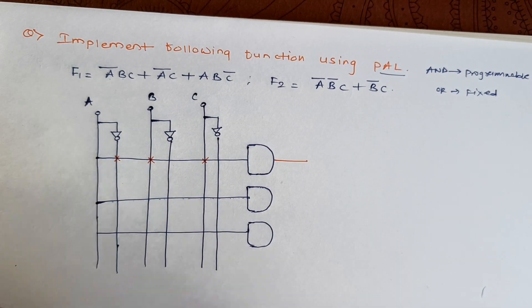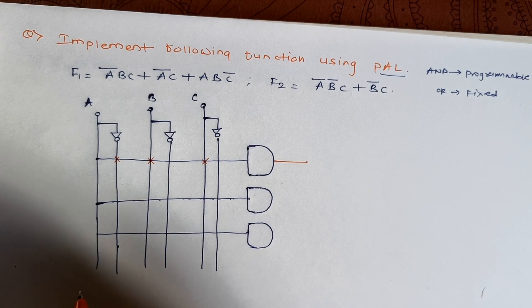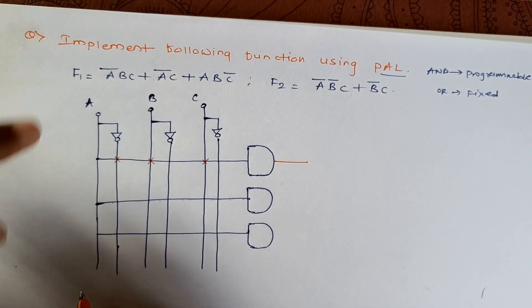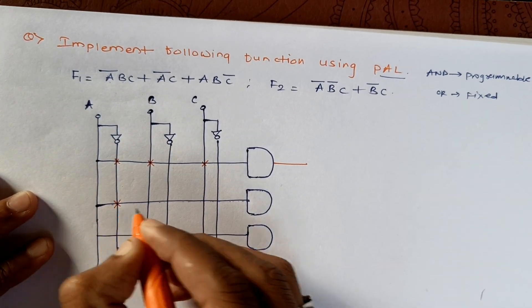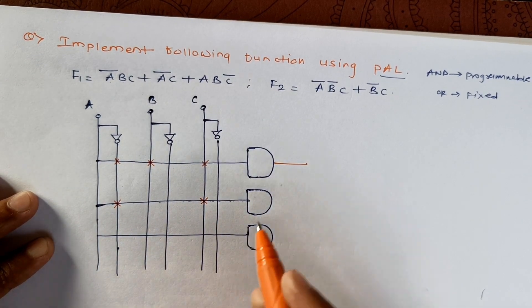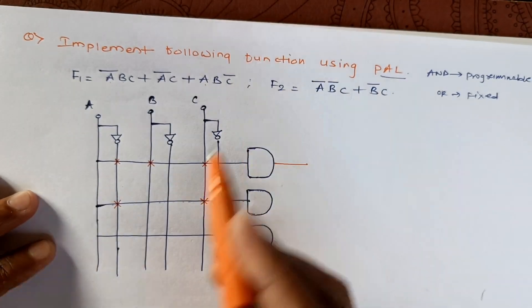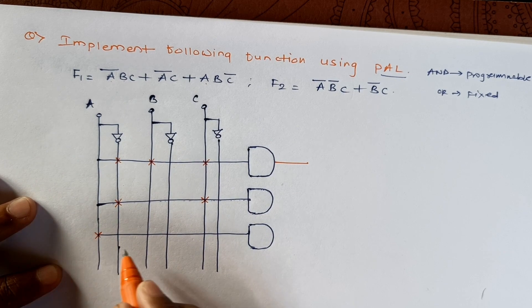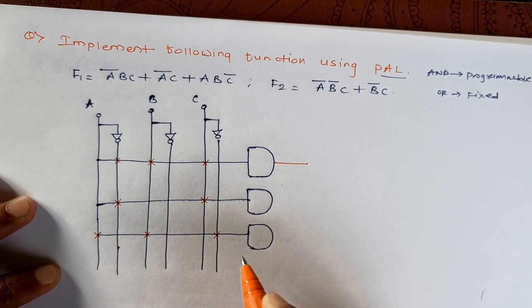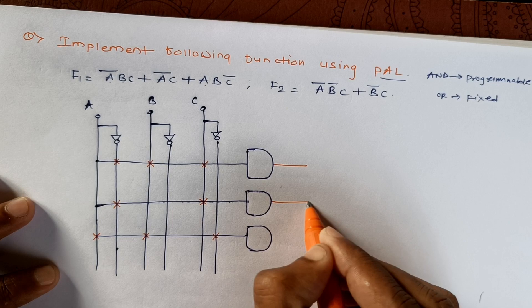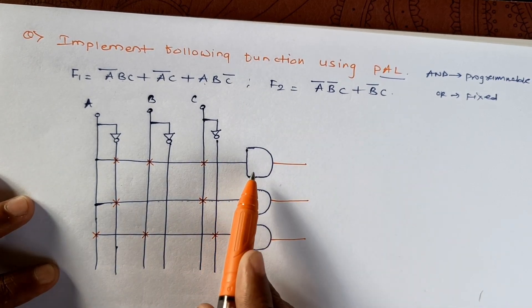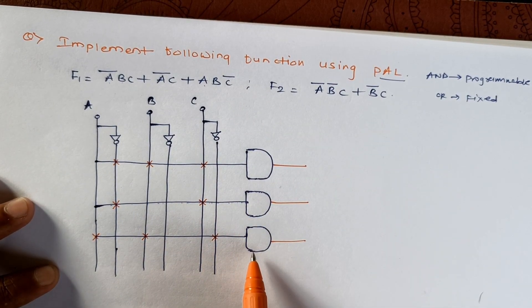Here it is. Now let's fuse the terms which are present in the second product term. We have A bar times C, so here it is A bar C. In the third we have ABC bar, so A normal, then we have B, and we have C bar.